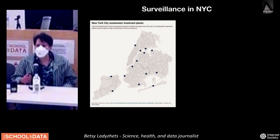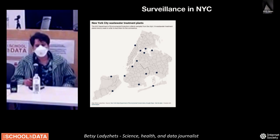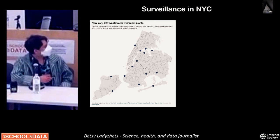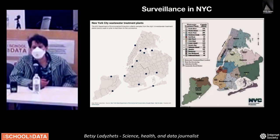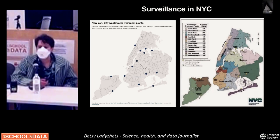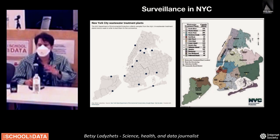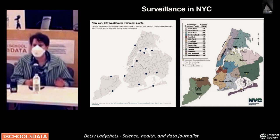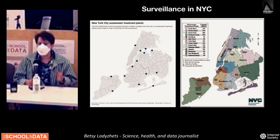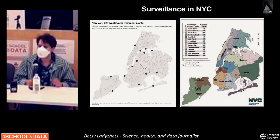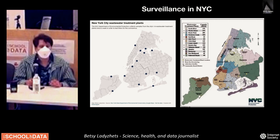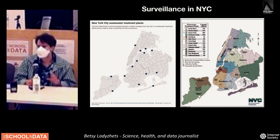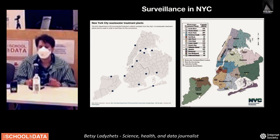This is a map of the 14 wastewater treatment plants. This is another map from DEP showing the regions they cover. You can find this online and look up which sewer shed your apartment feeds into, which is pretty cool. You can see exactly what data corresponds to your neighborhood or area of the city.